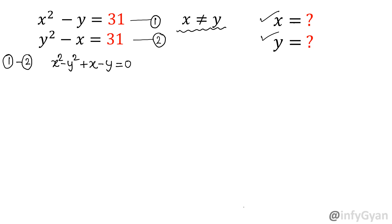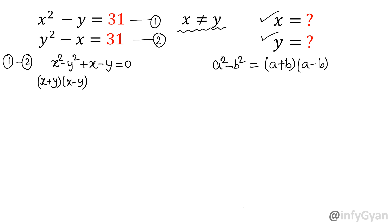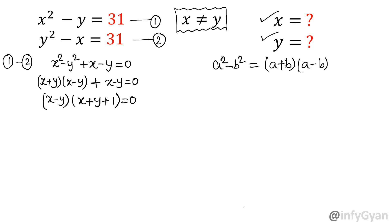Now using the difference of squares formula, a squared minus b squared can be written as (a+b)(a-b). So I will write x squared minus y squared as (x+y)(x-y), plus x minus y, equal to 0. Taking x minus y as common gives: (x-y)(x+y+1) = 0. Now since x is not equal to y, the solution x=y is not possible. So from the second factor, x plus y plus 1 equals 0, meaning x plus y equals negative 1.